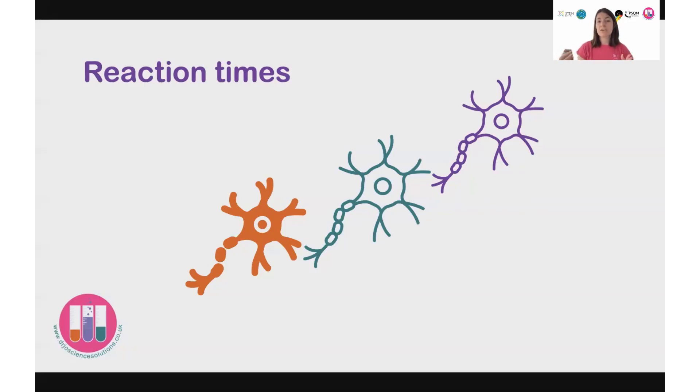And the speed of transmission is governed by a number of things. It might be the pathway that joins those neurons together. It might be the fact that there is a myelin sheath along the length of the axon, that big, long part of the neuron, which allows the electrical signal to kind of hop between them and move more quickly.